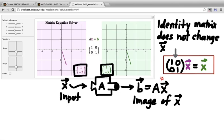And this app kind of gives us the visual picture for why that is. That no matter what purple vector I choose in the domain, its image, the green vector on the right, is exactly the same as the original was.